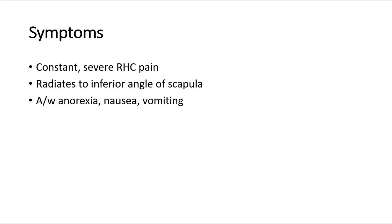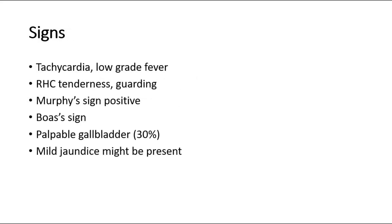The signs that we can look out for on physical examination: we check the vital signs, where there will be tachycardia and low-grade fever. Tenderness at the right hypochondrium will be noted together with guarding. Murphy's sign will be positive, where it is an inspiratory arrest during deep palpation of the right upper quadrant. Boas' sign is the hyperesthesia below the right scapula.